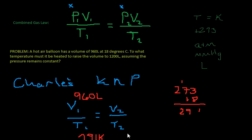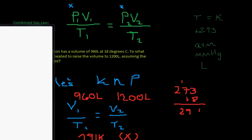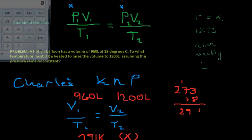And it says to what temperature, so we're gonna solve for temperature, so we're solving for x. What temperature must be heated to raise the volume to 1,200 liters? So, all we have to do now is cross-multiply and divide. We're gonna take 1,200 times 291 divided by 960, and I don't have a calculator here, so let me bring one up quick.